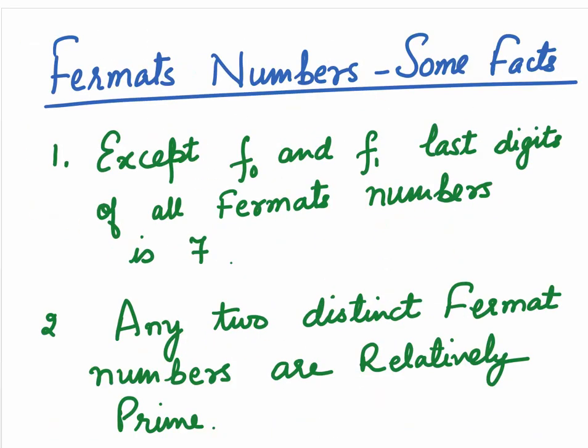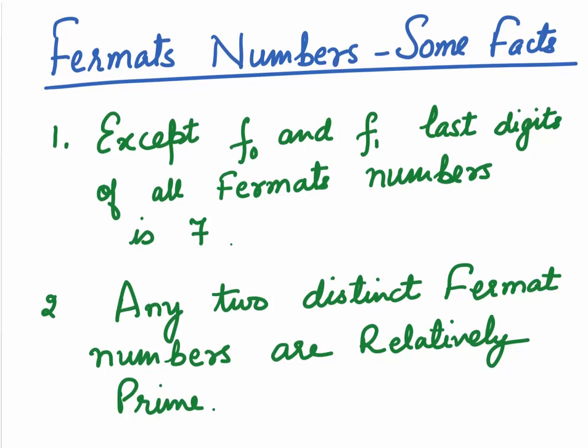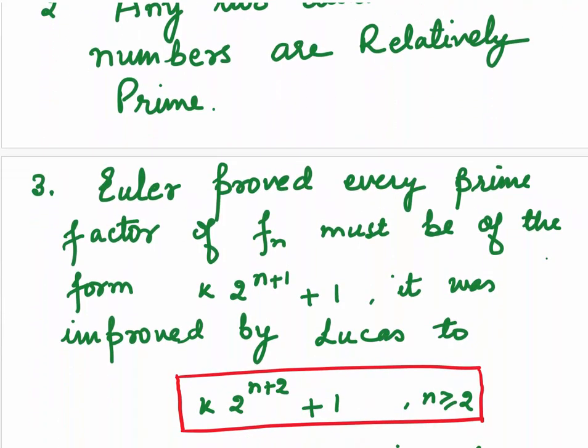Now, let's look at some facts. The first one. Except F0 and F1, last digits of all the Fermat numbers is 7. Second, any two distinct Fermat numbers are always relatively prime. Euler proved every prime factor of Fn must be of the form constant k times 2 to the power n plus 1 plus 1. It was later improved by Lucas and for n greater than equal to 2, he said that every prime factor must be of the form k times 2 to the power n plus 2 plus 1.